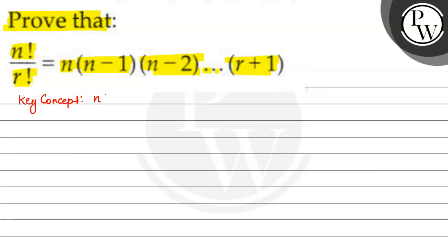Factorial is also known as a factorial. N factorial is equal to n multiplied by n minus 1 multiplied by n minus 2, then 3 multiplied by 2 multiplied by 1. Stop up here.